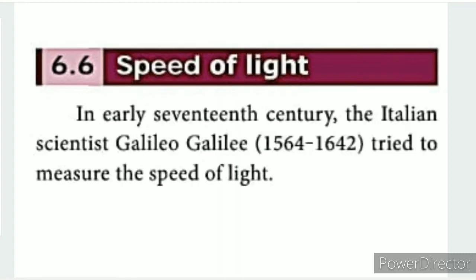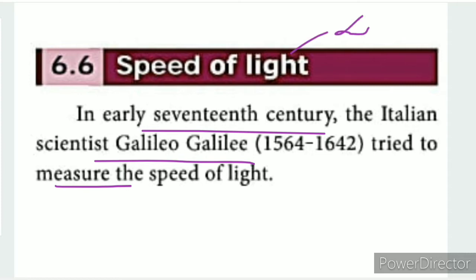Speed of light: in the 17th century, the scientist Galileo attempted to determine the speed of light. At the time, it was thought by some that the speed of light might be infinite.